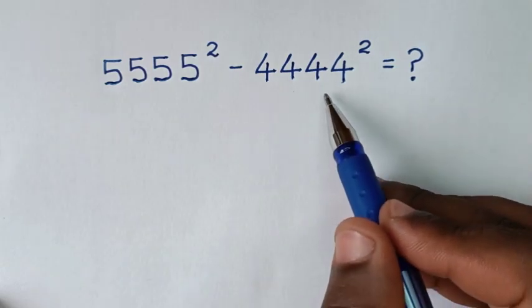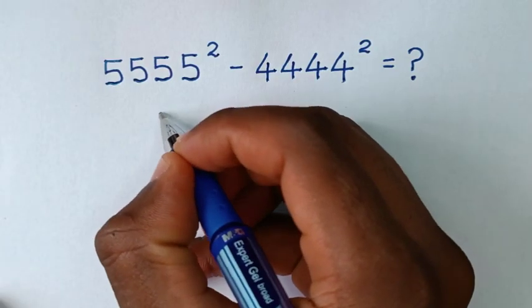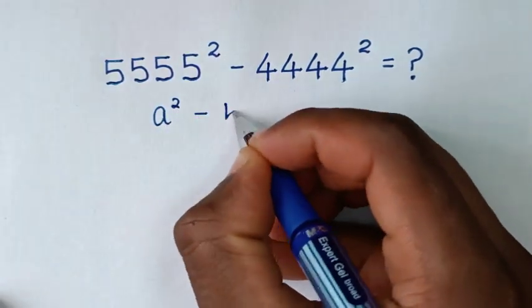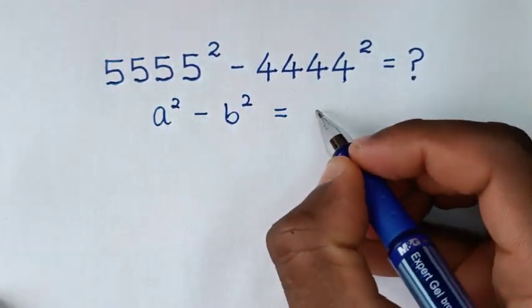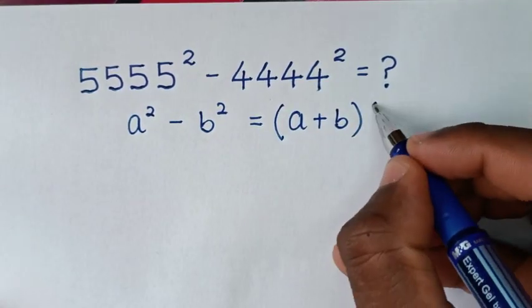It is in the form of a squared minus b squared, which is equal to a plus b times a minus b.